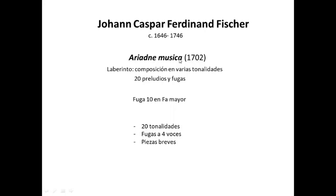Se trata de una alegoría respecto a la composición en esta época de piezas a varias tonalidades. En este caso se trata de una composición basada en 20 preludios y fugas, compuestas en 20 tonalidades. Componer en varias tonalidades en esta época era una especie de laberinto, por la dificultad que generaba la afinación de estos instrumentos de teclado. Y esta es una especie de alegoría, ya que el mito de Ariadna tiene que ver con Teseo y el laberinto del Minotauro.